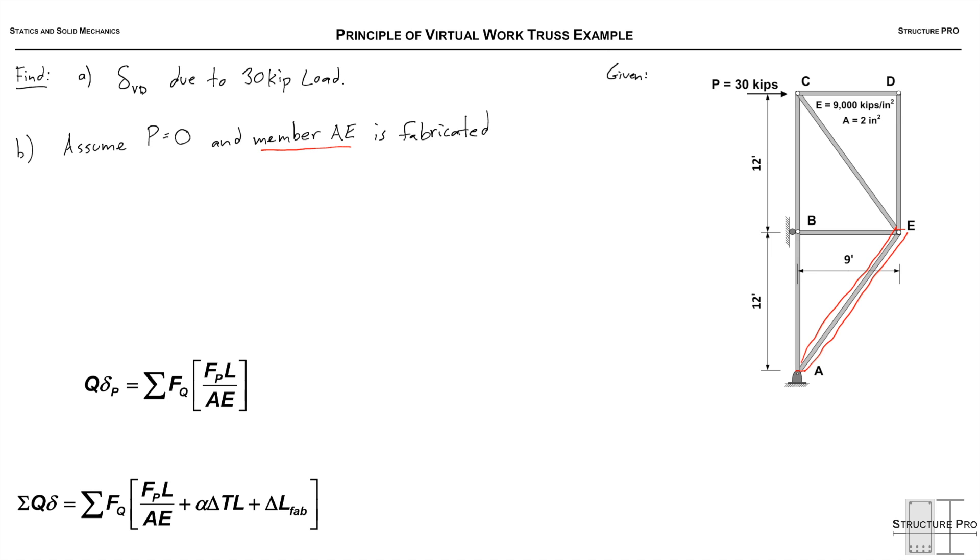We're going to assume that there's no loads on the structure, and we're going to assume that member AE is fabricated 8 fifths of an inch too long. And we're asked how far to the right should support B be moved to ensure that there is no vertical deflection at D as a result of this fabrication error.